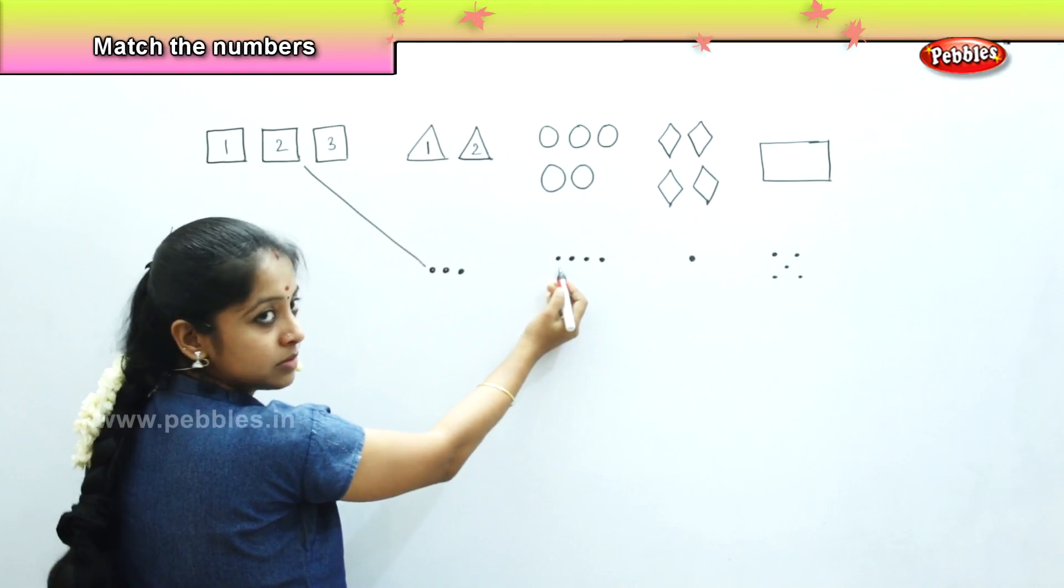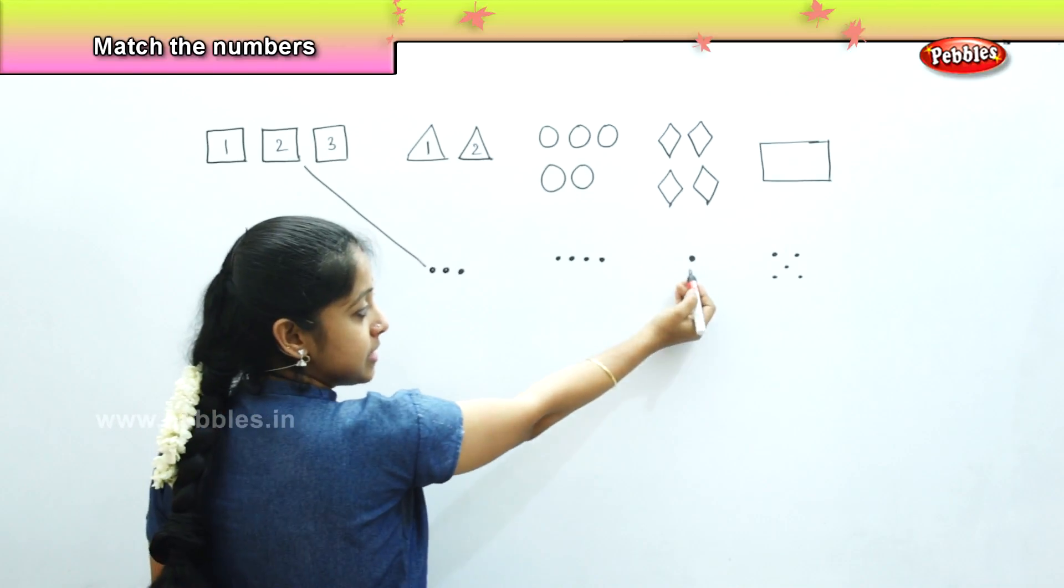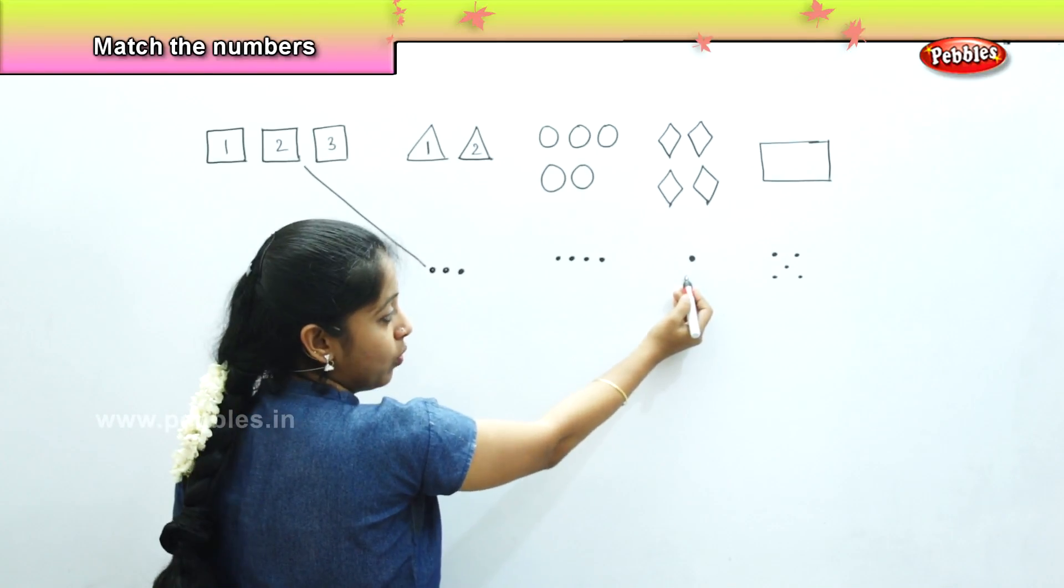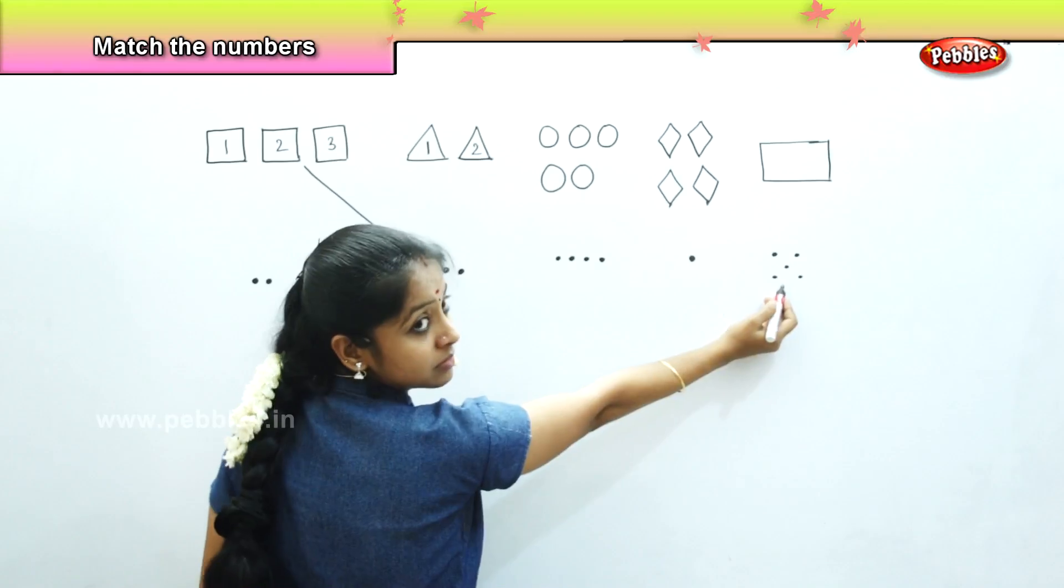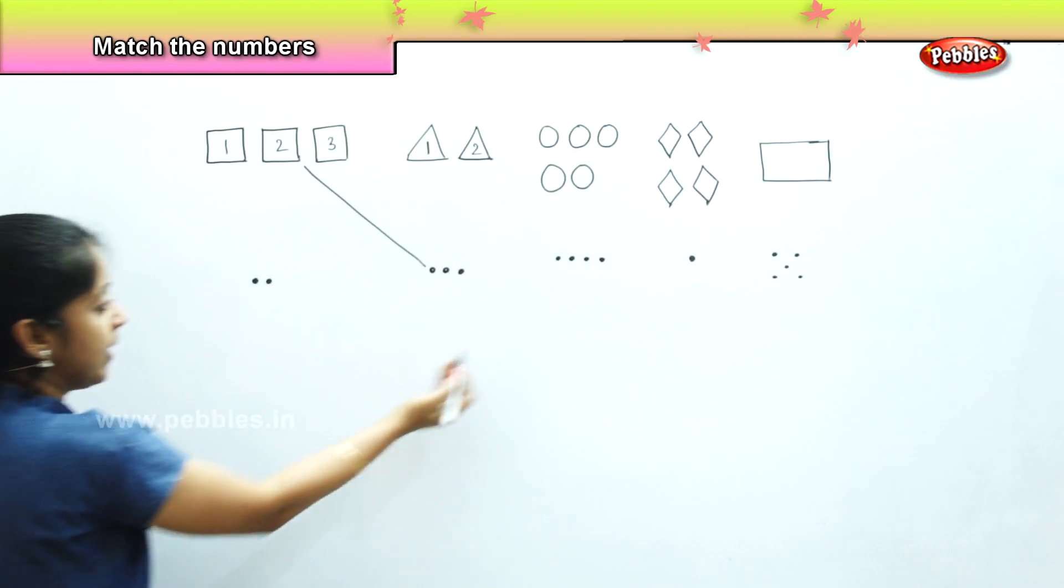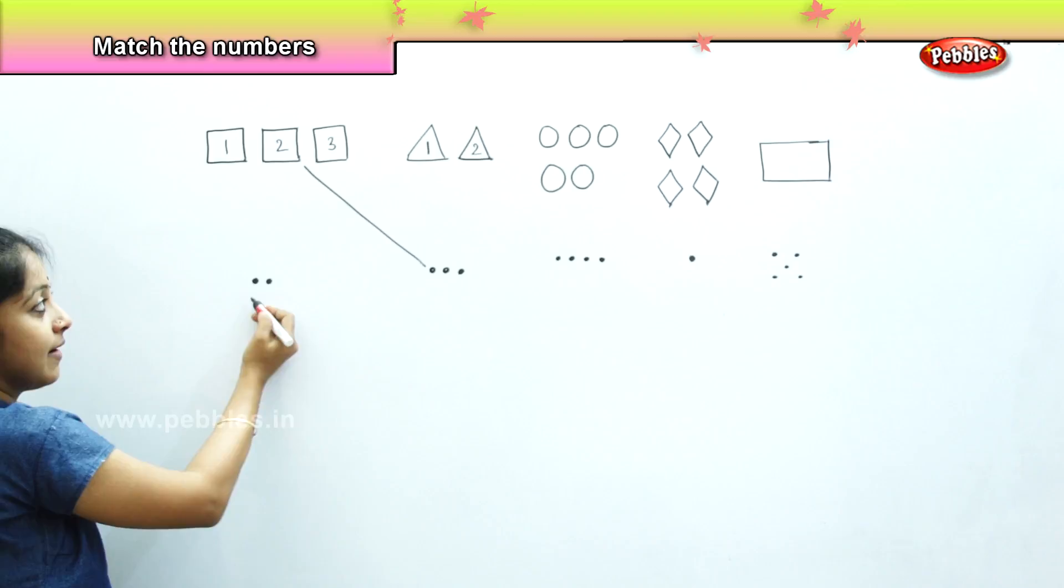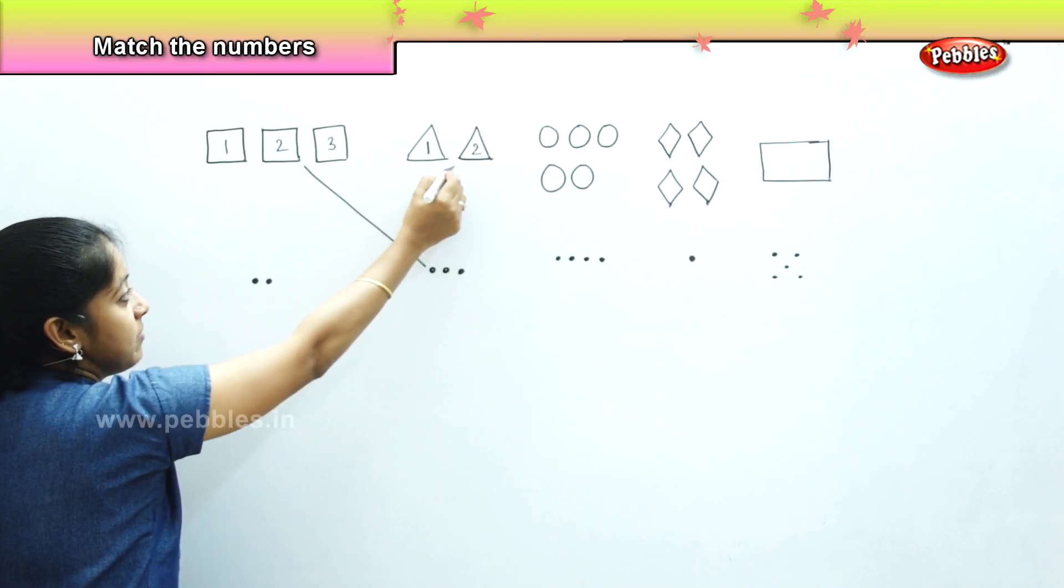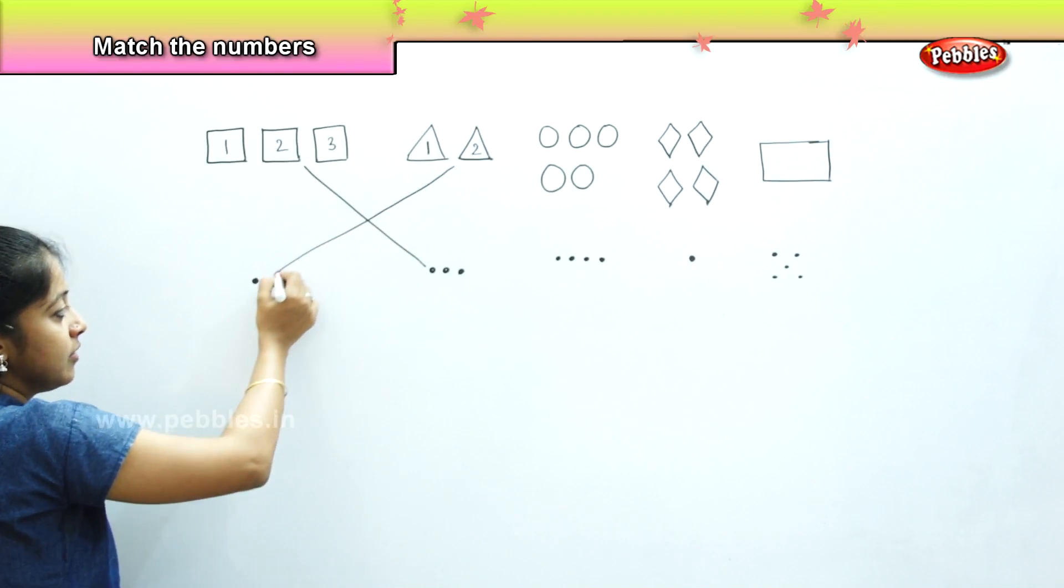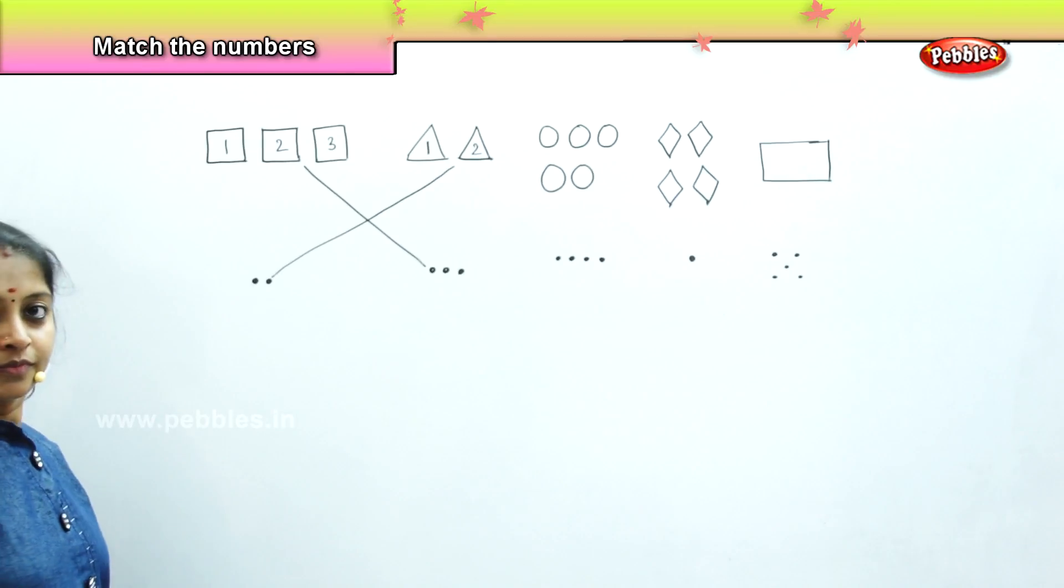Is it here? No. Is it here? No. Is it here? No. So, where is it? Is it here? Yes. So, we will be matching this with the first dot. Clear?